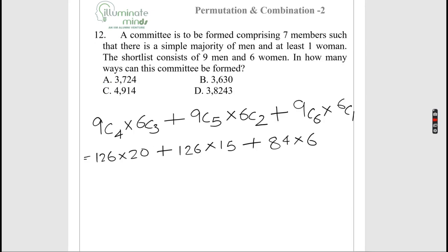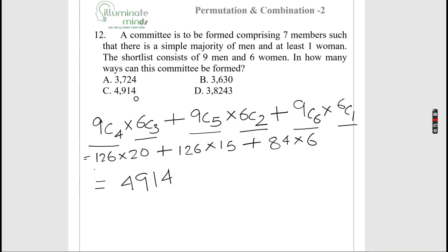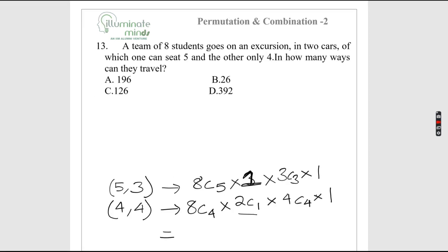A committee of 7 must have a simple majority of men with at least one woman, from 9 men and 6 women. Possible cases: 4 men 3 women, 5 men 2 women, 6 men 1 woman. Computing 9C4×6C3 + 9C5×6C2 + 9C6×6C1 gives the answer 4914, option C.